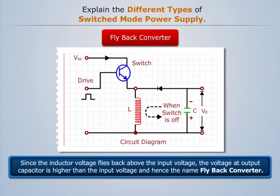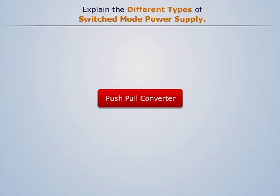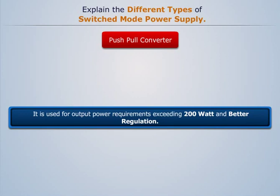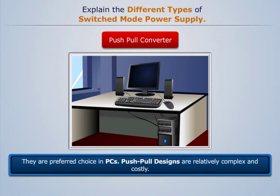Let's now discuss the push-pull converter. It is used for output power requirements exceeding 200 watts and better regulation. They are the preferred choice in PCs. Push-pull designs are relatively complex and costly.